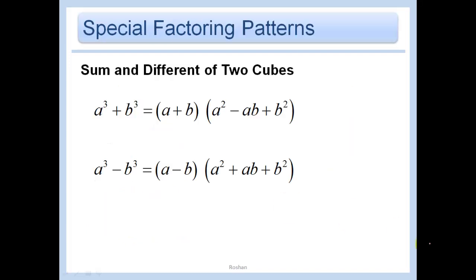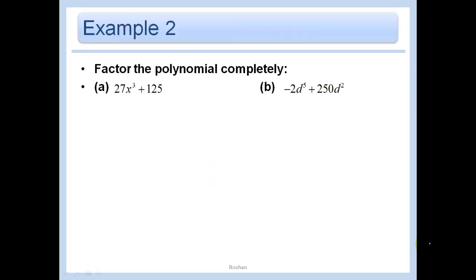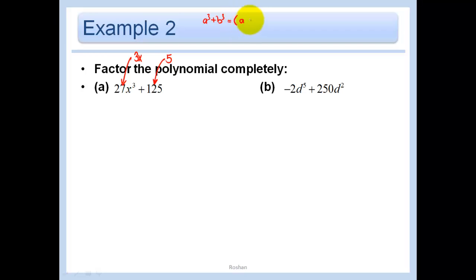These are two formulas you just need to know and we'll practice them now. To identify them, just look at your terms. For example, if we have 3x and cube it, we get this. You notice we have something cubed plus something cubed. So let me write the equations: a cubed plus b cubed can be factored into (a + b)(a² − ab + b²).